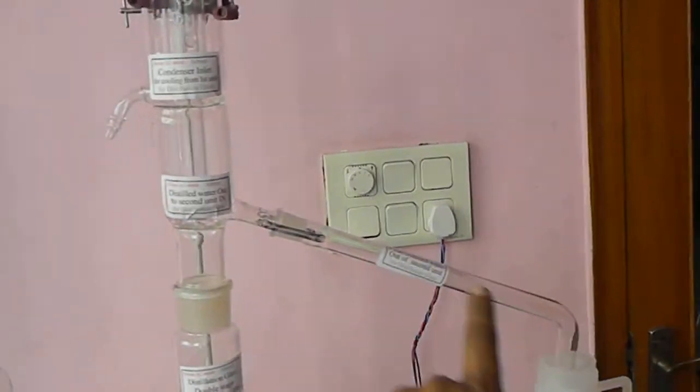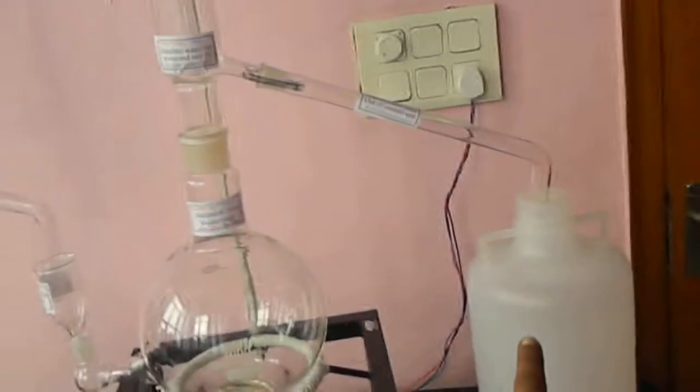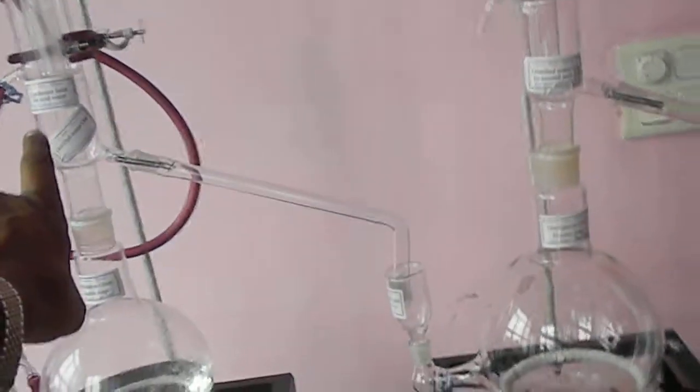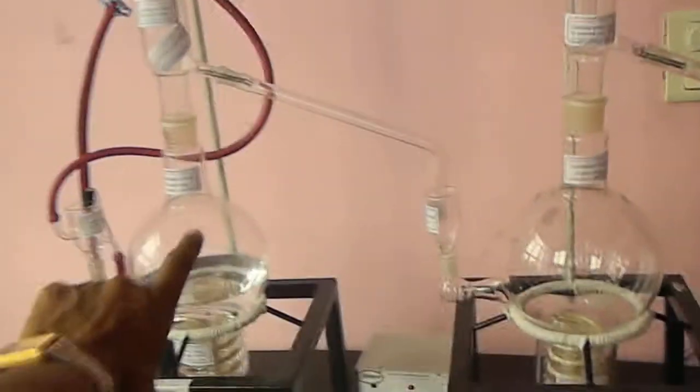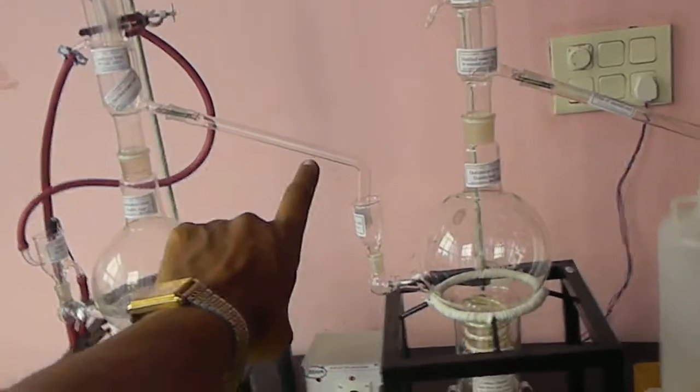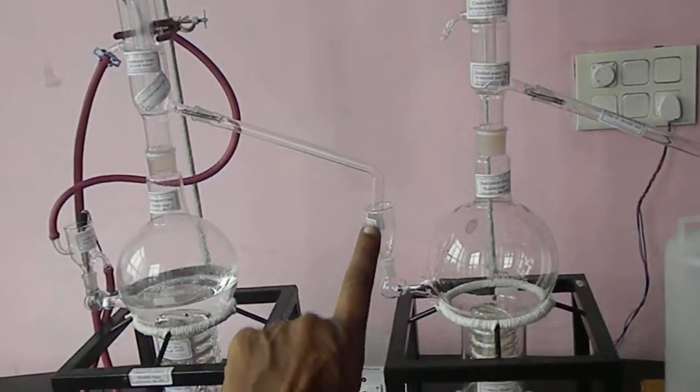You can collect either from this first section directly distilled water, or through the second section this water can be collected. But if you want to have a double distillation, first distill this water flask, the setup will distill it, and then the water will come out through this section.